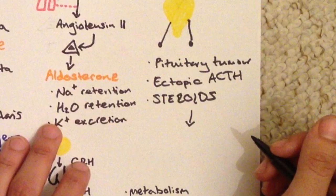So the first two are known as endogenous causes - they are from within the body - but steroid use is an exogenous cause. We give steroids for many diseases, and if patients are on too high a dose or on them for too long, they can develop Cushing's syndrome.